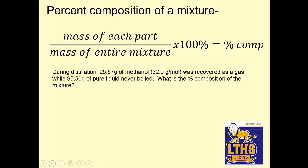Percent composition can be a mixture, too. So the mass of each part over the mass of the entire mixture. So I guess instead of each, I should say mass of one part, and that will give you the percentage of that part, okay? During distillation, 25.57 grams of methanol, now this is the molar mass of methanol. They'll give us the molar mass of pretty much anything afterwards, was recovered as a gas, while 95.5 grams of a pure liquid never boiled. What is the percent composition of the mixture? So what we have is we have methanol, and we have pure other, pure something, okay? Pure X. Hey, isn't pure X like a hand sanitizer? I think it is. So what I'm going to do is I'm going to do the mass of one part. So I'm using this equation. Mass of one part, 25.57, over the mass of both mixtures. So that's going to be 25.57 plus 95.5 times 100%.